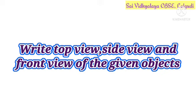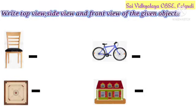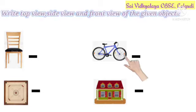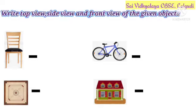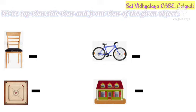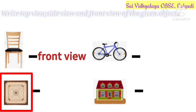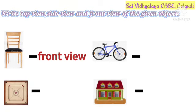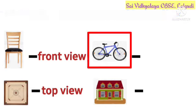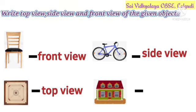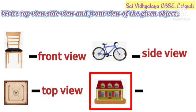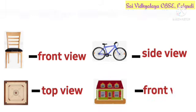Second exercise: write the top view, side view, and front view of the given objects. The objects given are: chair, carom board, bicycle, and house. First, chair — the front view of the chair is given, so write front view. Second, carom board — the top view is given, so write top view. Third, bicycle — the side view is given, so write side view. Last, house — the front view is given, so write front view.